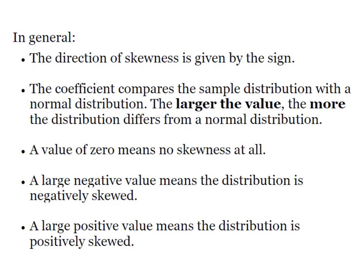When we look at Pearson's coefficient in general, we know that the direction of the skew is given by the sign of the coefficient. What the coefficient does is it compares the sample distribution with a normal distribution, so the larger the value of the coefficient, the more the distribution differs from a normal distribution.